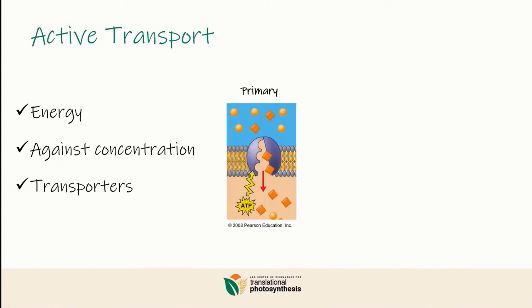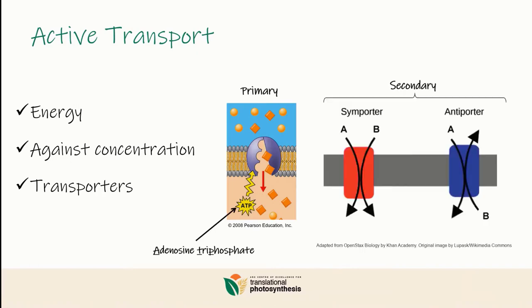In primary active transport, the energy comes from ATP — adenosine triphosphate — which is a very common cellular currency.